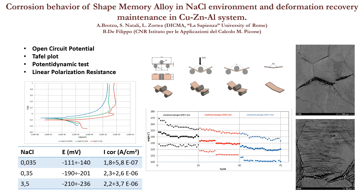In order to check the effect of corrosion on the shape-memory effect, a repeated bending test and a thermal recovery have been carried out on a corroded sample. At each cycle, the maximum deformation, the elastic recovery, and the final residual deformation have been measured. The surfaces have been observed by scanning electron microscope in order to highlight the damage evolution.